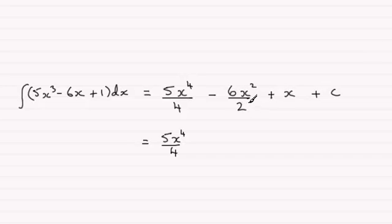For this one, we can divide the 2 into the 6, going 3 times, so you've got minus 3x², then you've got plus x, and then the constant of integration, plus c. Okay?